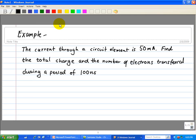So here we're given an example. The current through a circuit element is 50 milliamps. Find the total charge and the number of electrons transferred during a period of 100 nanoseconds.